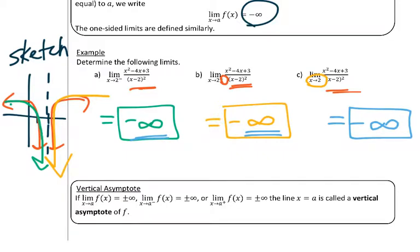Let's talk about vertical asymptotes. By definition, if the limit as x approaches a of f of x equals positive or negative infinity, the limit as x approaches a from the left equals positive or negative infinity, or the limit as x approaches a from the right equals positive or negative infinity, then the line x equals a is a vertical asymptote of f. We can see it from the example above — from the left side it approaches negative infinity, from the right side it approaches negative infinity, and the overall limit shows it approaches negative infinity as x approaches 2.